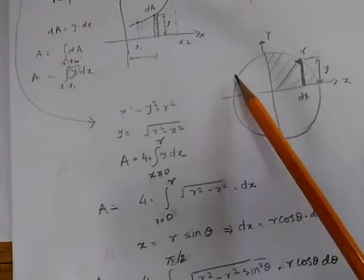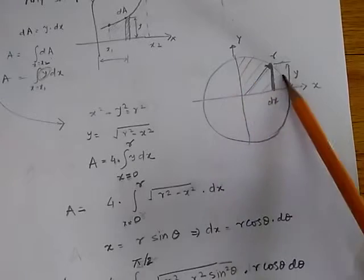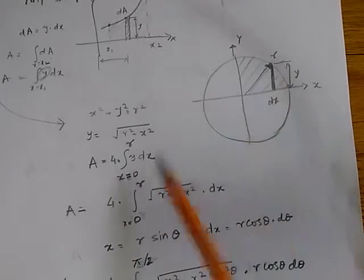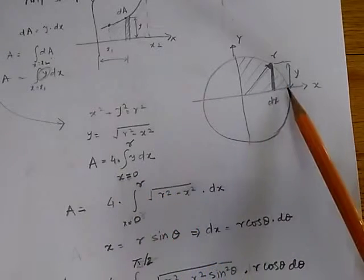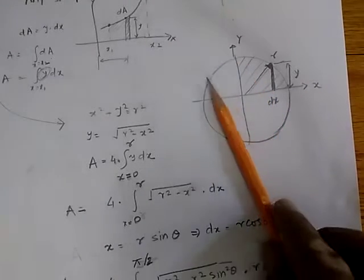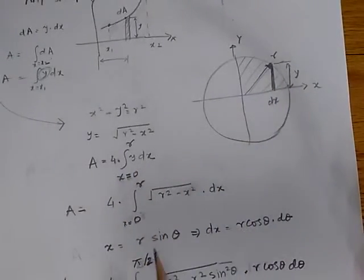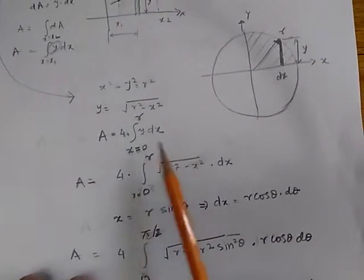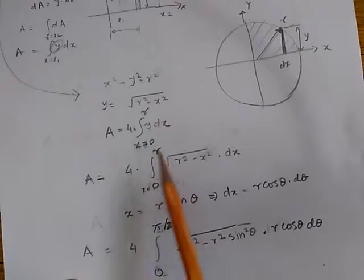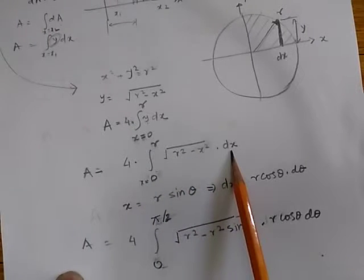The area of the full circle is 4 times the area of one quadrant. Therefore, we can write area = 4∫y·dx as x varies from 0 to r. We cannot integrate y·dx unless we express y in terms of x, so we substitute y = √(r² - x²), giving area = 4∫₀ʳ √(r² - x²) dx.